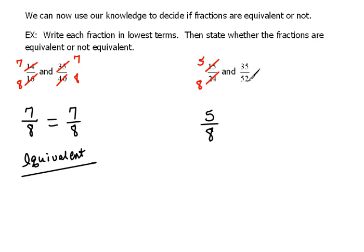5 won't go into both of them. Oh, I missed 4. 4 won't go into 35. 10 won't go into both of them. There's really nothing that will divide into 35 and 52 at the same time. This is fully reduced.